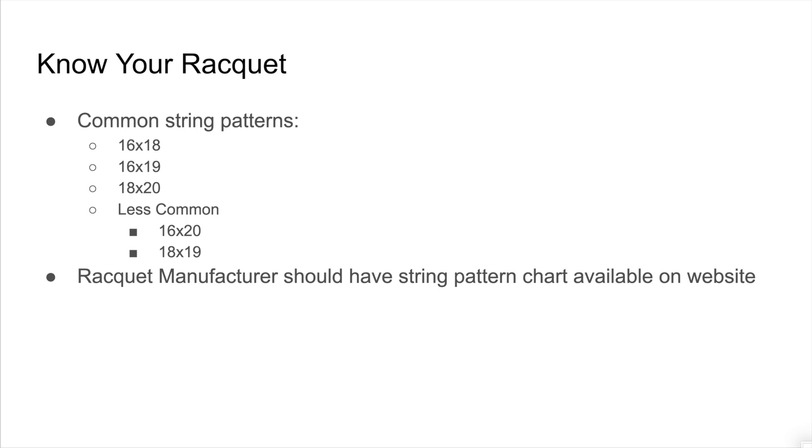In this case we're only concerned about what the pattern is, because that is going to affect how we string the racket. You can always go to the racket manufacturer website to find the pattern. Oftentimes the pattern is listed on the racket itself. And when in doubt, you could always count on a strung racket so you know which are crosses and which are the mains.